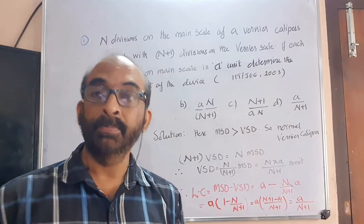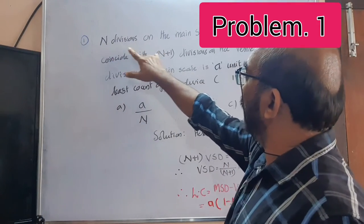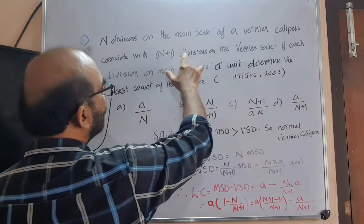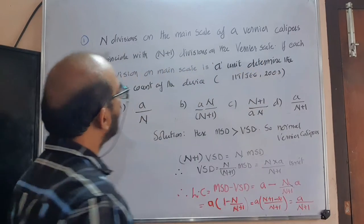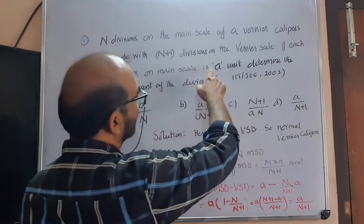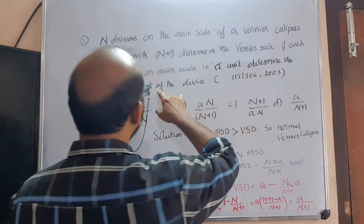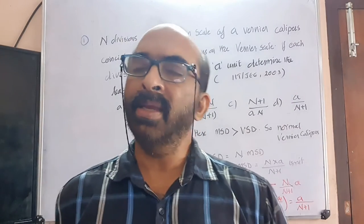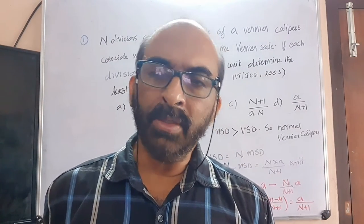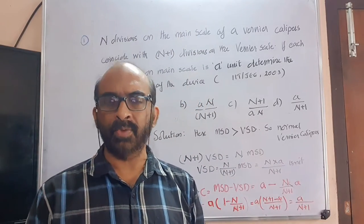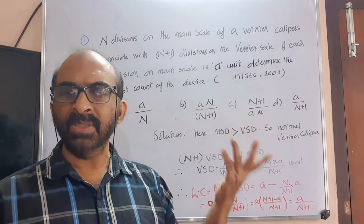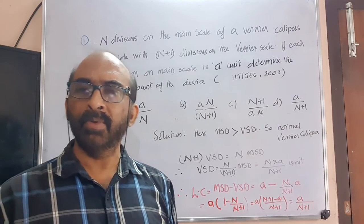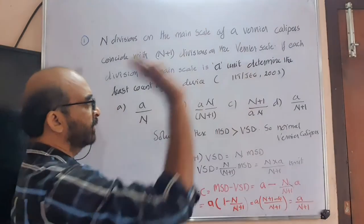Here is our first problem. N divisions on the main scale of a vernier caliper coincide with N plus one divisions on the vernier scale. If each division on the main scale is A units, determine the least count of the device. This question was asked in IIT 2003. It was a non-objective type question, but I have converted it to an objective type. Even though it is an IIT question, it is based on normal, regular information.